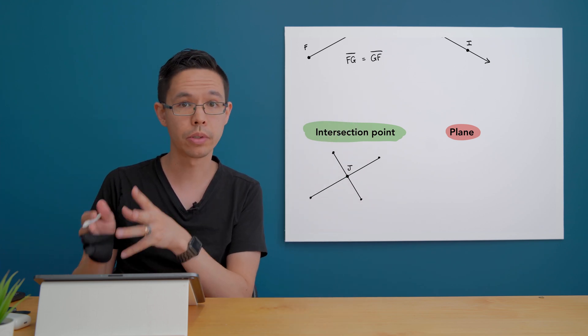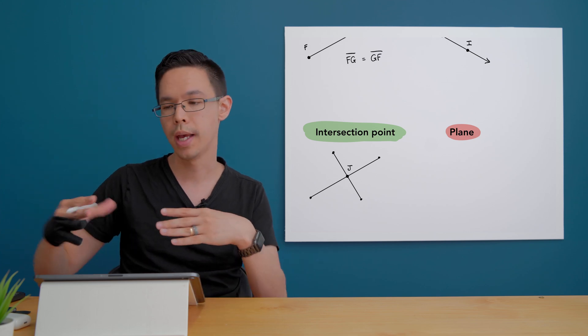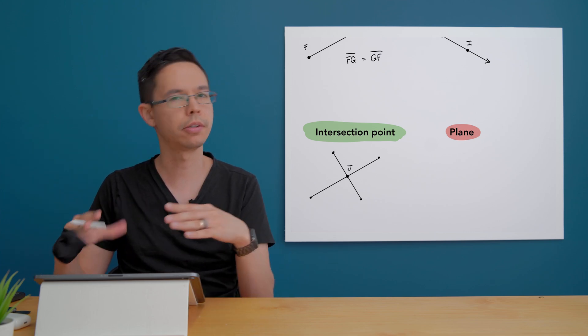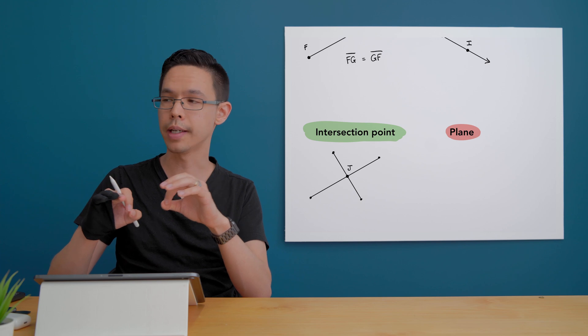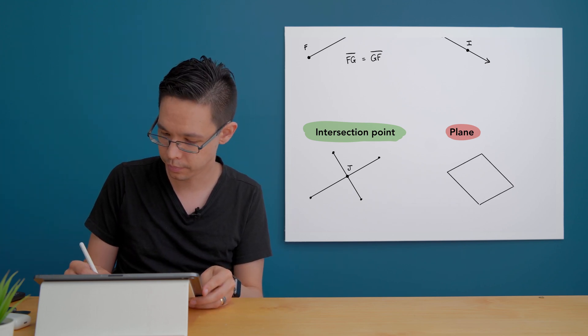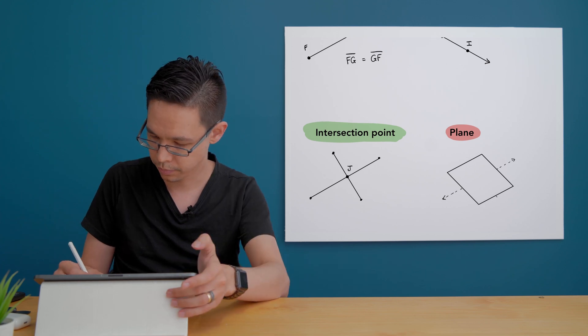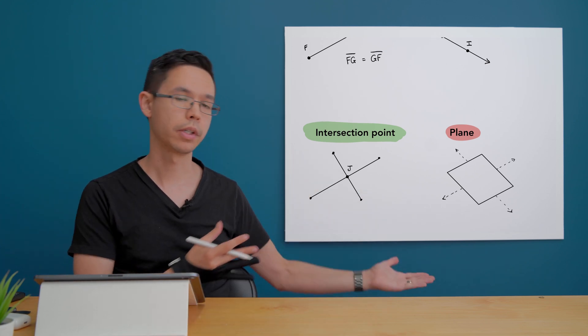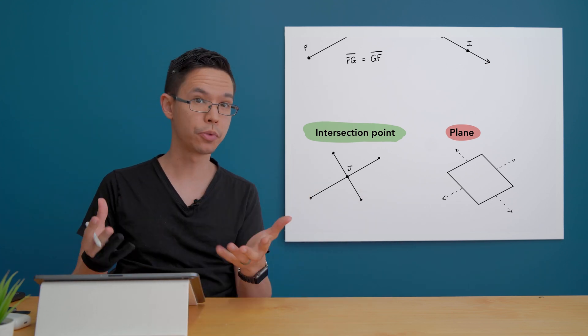We show this on our diagrams by drawing usually a rectangle tilted to one side with dotted arrows pointing in those two dimensions. And there we go, there's our diagram for the plane. Let's move on to our next one.